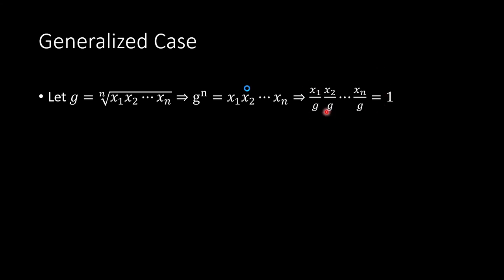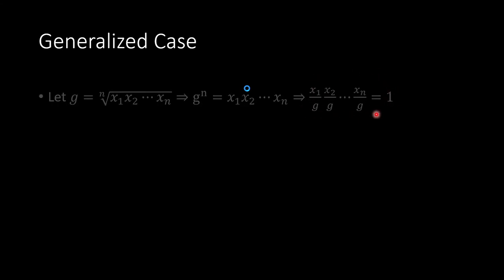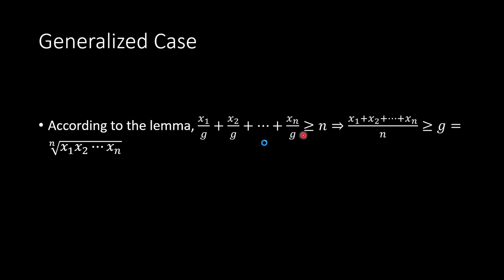The n numbers x1/g, x2/g, ..., xn/g satisfy the condition of the lemma — their product is 1 — so the lemma tells us their sum is ≥ n. This gives us (x1 + x2 + ... + xn) / n ≥ g, and since g is the geometric mean, the AM-GM inequality is proved.